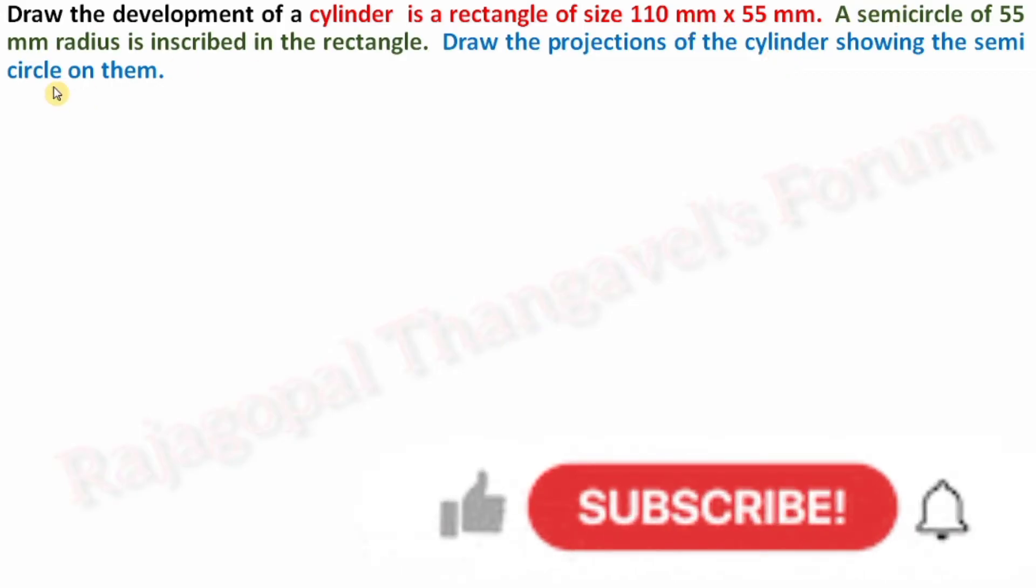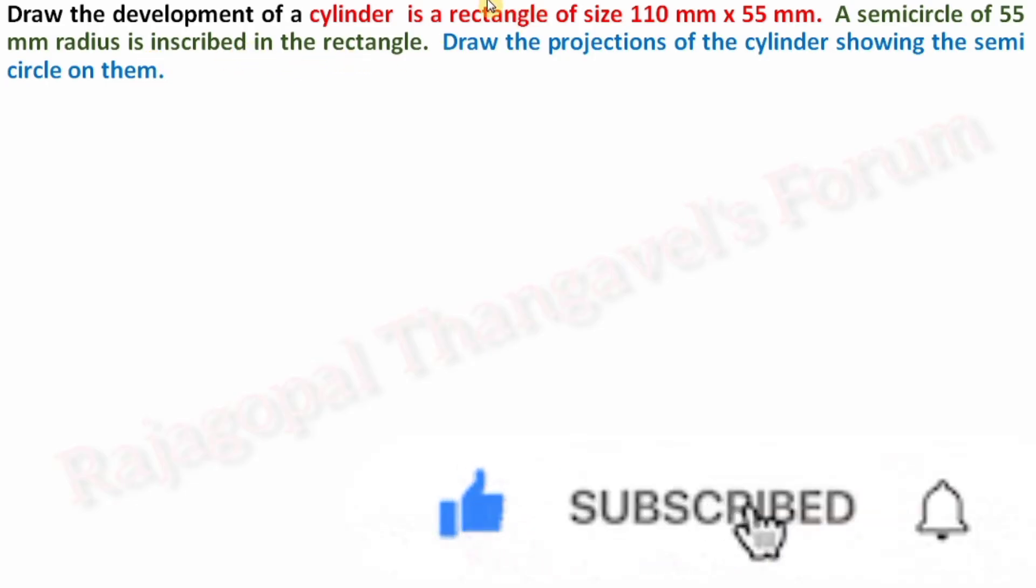A semicircle of 55 mm radius is inscribed in the rectangle. Where is the rectangle? The rectangle size is 110 by 55. Inside this rectangle we are going to draw a one semicircle. Draw the projection of the cylinder showing the semicircle on them. After completing the development with this rectangle size as well as keeping the semicircle inside the rectangle, we have to project the cylinder with showing the semicircle.